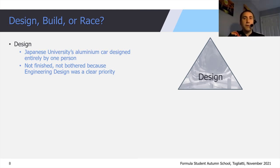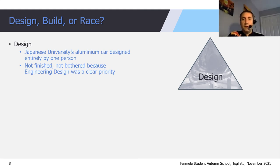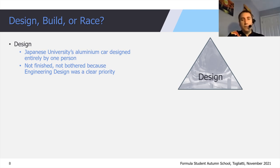A good example of a team really focused on design was a Japanese university I saw at Formula Student about 10 years ago. The car was made entirely from aluminium, designed by pretty much one person. They were halfway through the competition and the car clearly wasn't finished — not just not finished, but unfinished by about two months. The team of three people couldn't care less. For them, it wasn't a consideration that the car hadn't been fabricated. It was all about realising this amazing design — everything was beautifully artisan made, just not finished.